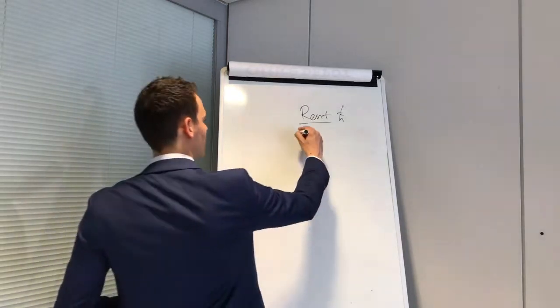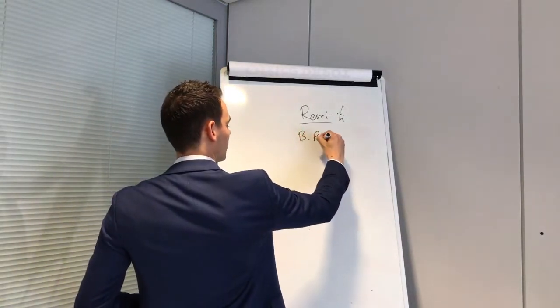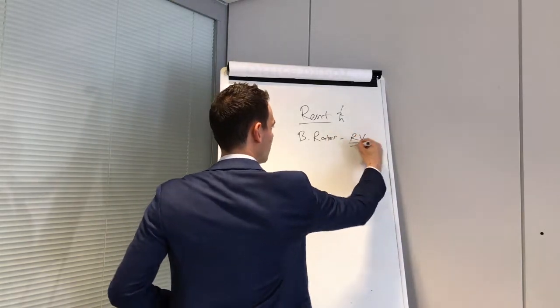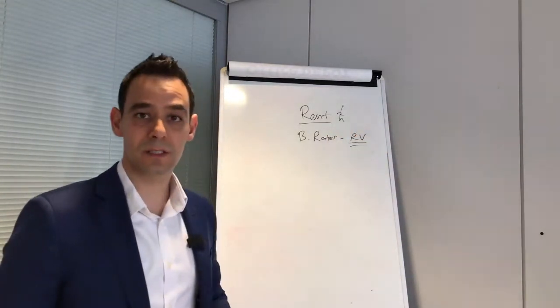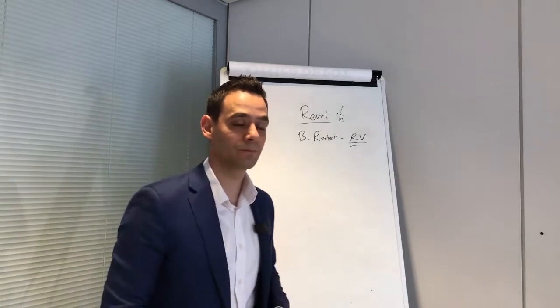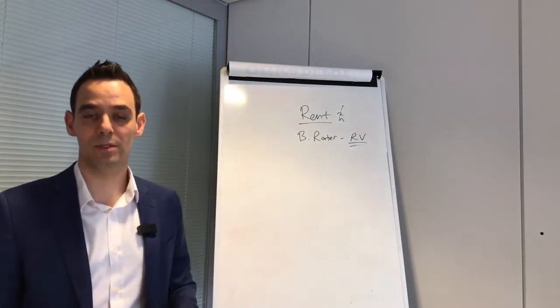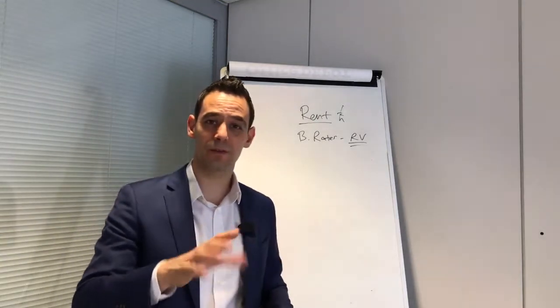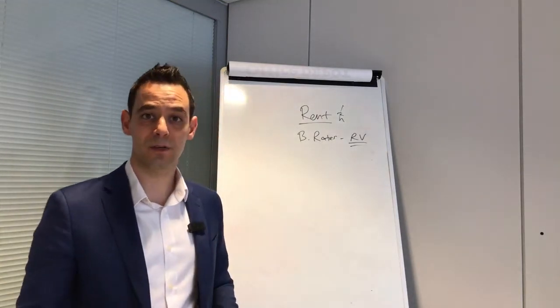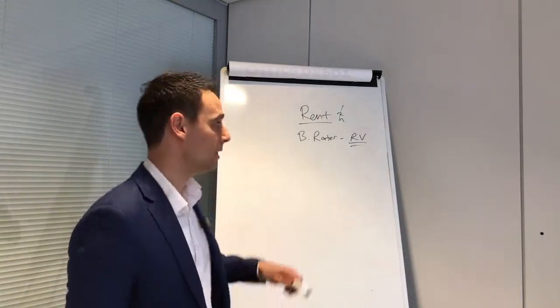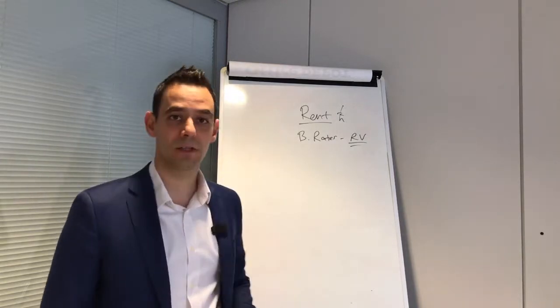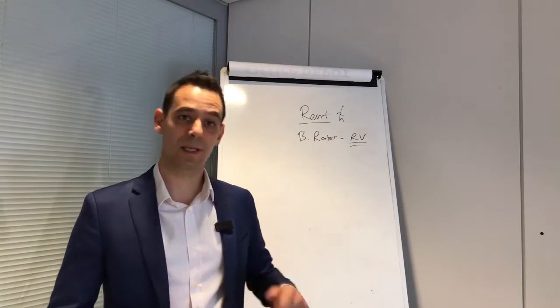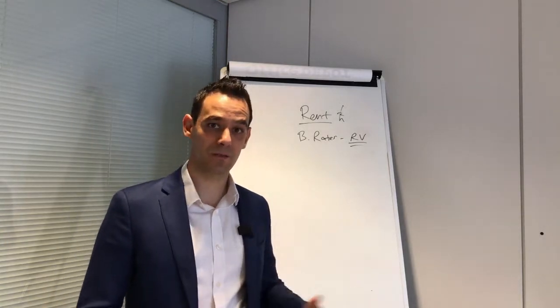So what you'll have is a rateable value on the business, which is an estimate of how much rent roughly the property's worth in theory, and then you'll pay a proportion of that normally about 45% in business rate. So as a rough rule of thumb, if you know you're going to be paying X in rent for property, factor in let's say half or just under, that's how much you'll be paying every year in business rates.